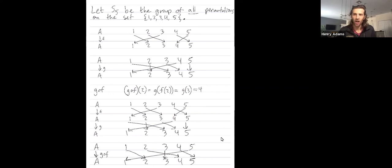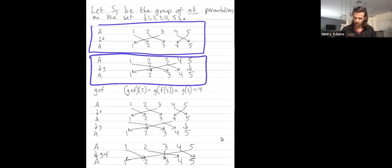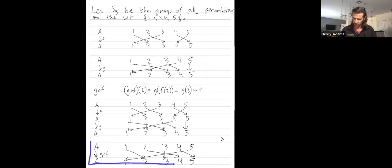Fantastic. So that's the operation in this group. When you want to combine two permutations, that's how you do it. Here we've taken F and we've taken G and we've composed them to get G composed with F, which means doing F first and then G second.